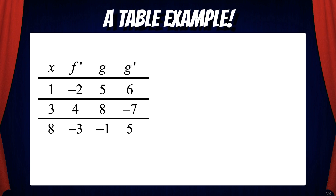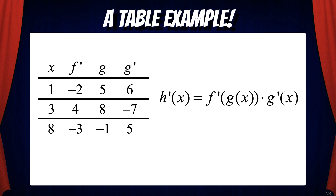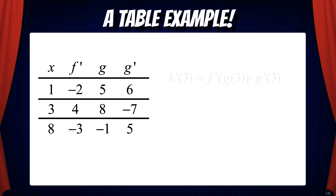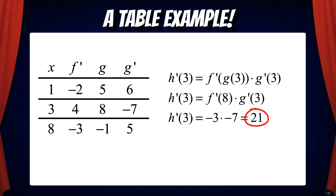Now suppose we have an example like this: h(x) equals f(g(x)). Find h'(3). Notice that we're only given a table of values. Since h is a composition of functions, we use the chain rule: h'(x) equals f'(g(x)) times g'(x). Substituting 3: h'(3) equals f'(g(3)) times g'(3). From the table, g(3) equals 8, so h'(3) equals f'(8) times g'(3). f'(8) equals negative 3 and g'(3) equals negative 7. Therefore h'(3) equals 21, and that's our final answer.